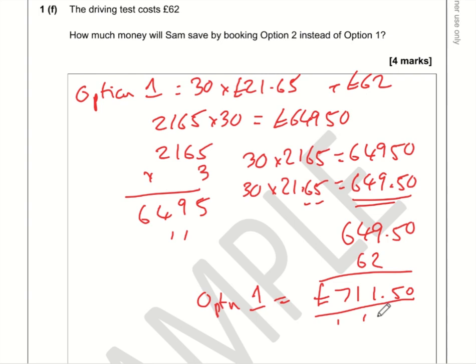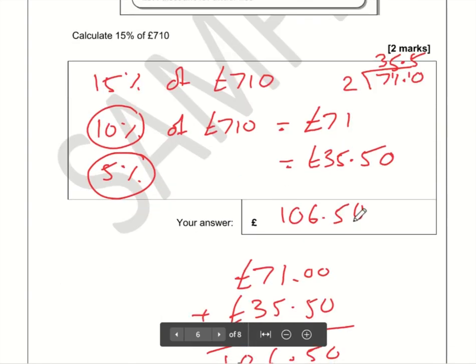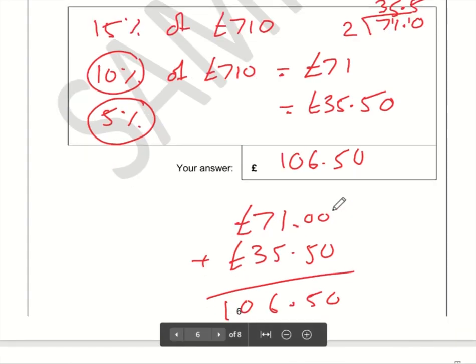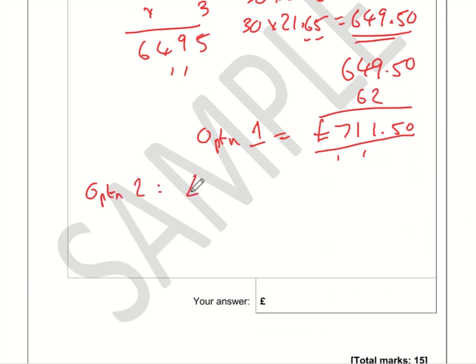It's just £710 with a 15% discount, which is £106.50. So Option 2 is going to be the cost of the course, which as I said was £710, take away the discount which was £106.50.